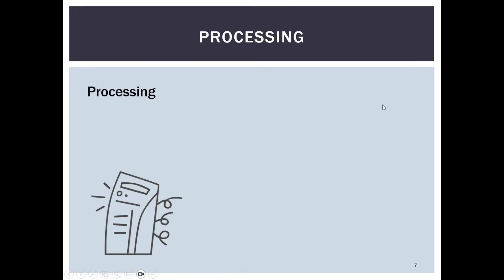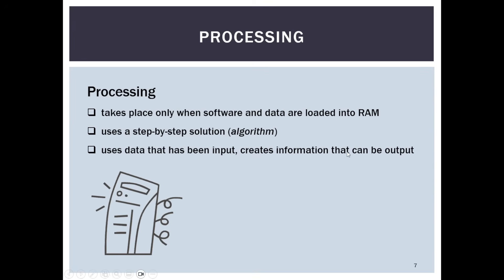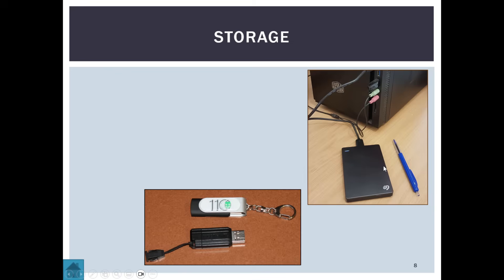Processing takes place only when software and data are loaded into RAM. It uses a step-by-step solution known as an algorithm, and it uses data that has been input to create information that can be output. Typical tasks involved include searching, sorting, comparisons, decisions, and mathematical calculations — that is where processing comes in.